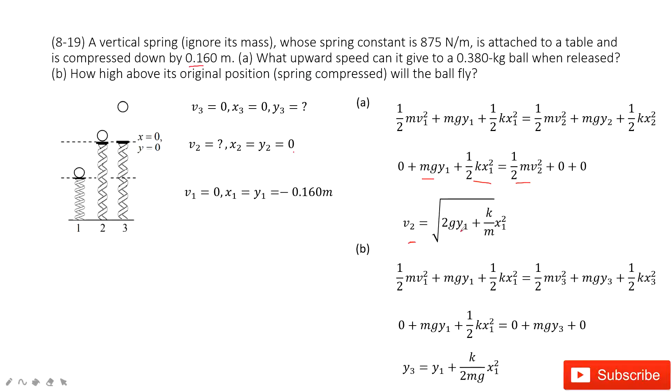And in this function, you can see the g is the constant, y1 is given, k is the constant given, spring is constant. And mass is given. And x1 is also given. So if you input the known quantities, very easily you can get the v2.